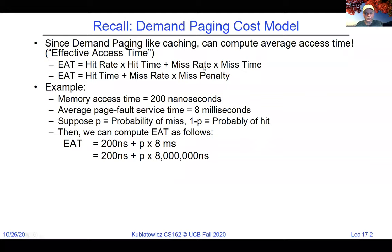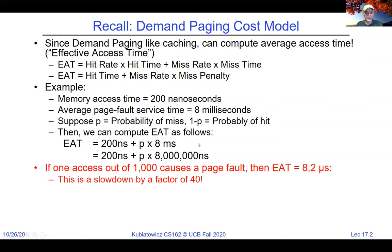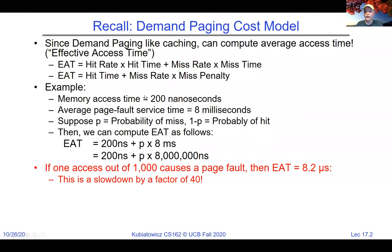We came up with this effective access time, which looks very much like the average memory access time. The key thing to note is this simple equation: memory access time from DRAM, say 200 nanoseconds; page fault going to the disk, maybe eight milliseconds. We built an effective access time, and what we see is this value of p — if one access out of 1000 causes a page fault, your effective access time goes up to 8.2 microseconds, which is a factor of 40 larger than DRAM. Clearly, one out of 1000 is not a good idea.